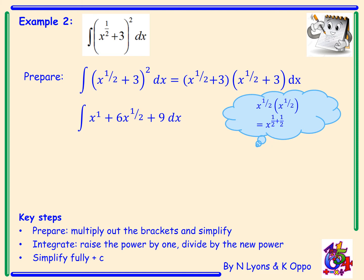Now once we have that we just have to integrate. That's going to give me a half x squared plus 6 times x to the power 3 over 2 divided by 3 over 2 plus 9x. Tidying that up, I've got a half x squared plus 4 times x to the power 3 over 2 plus 9x plus c. Taking it from a fractional index back into root form, I've got half x squared plus 4 times the square root of x cubed plus 9x plus c.